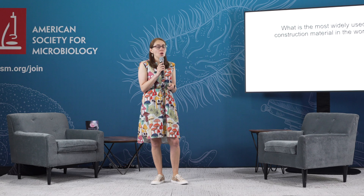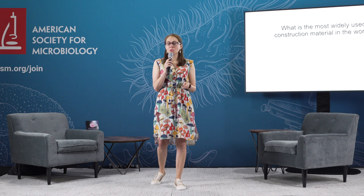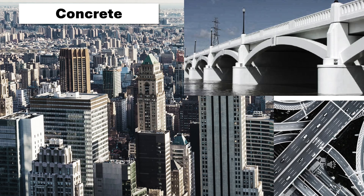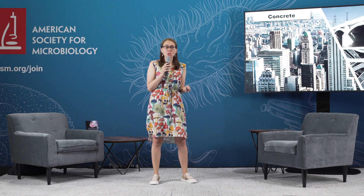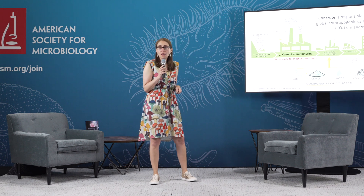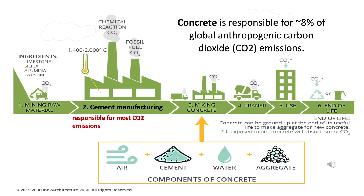I want to start with a question: what is the most widely used construction material in the world? I'll give you a hint — its manufacturing releases more CO2 emissions than flying. Any guesses? I'm talking about concrete. Every year we use more than 25 billion tons of concrete in the world. It's everywhere. And while concrete has helped us shape our world, its production comes at a very high cost. Concrete production has an enormous carbon footprint — it releases more than 8% of the total global anthropogenic emissions of CO2.